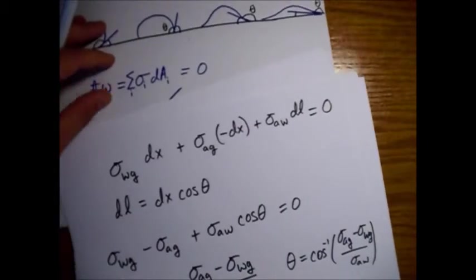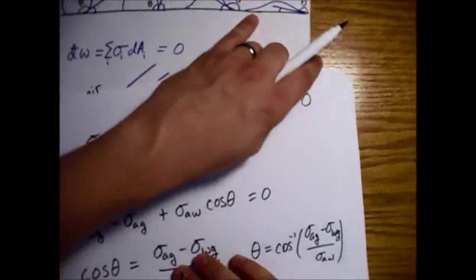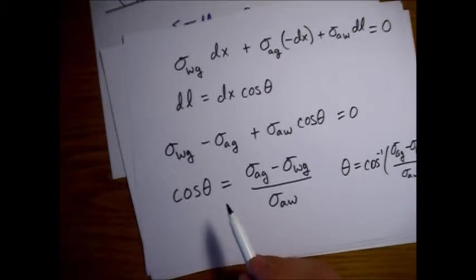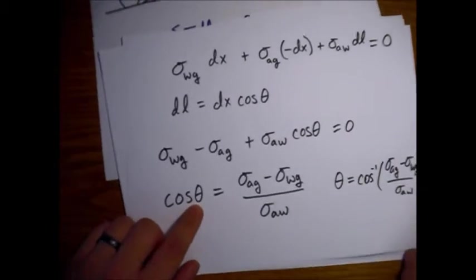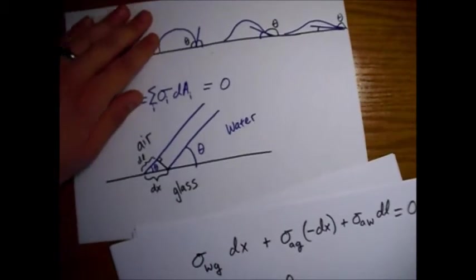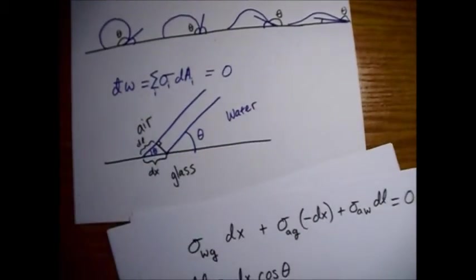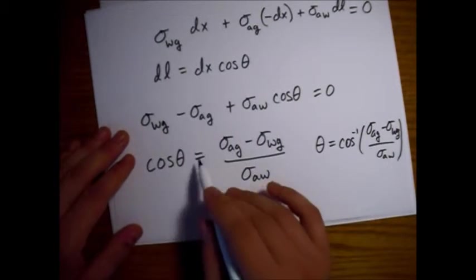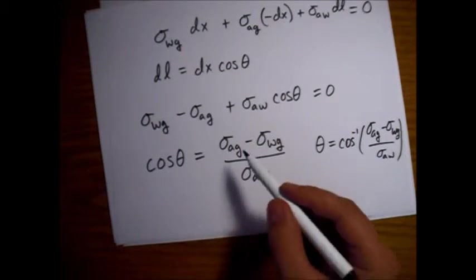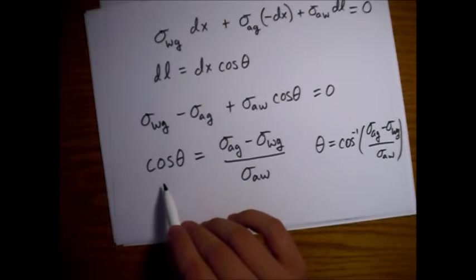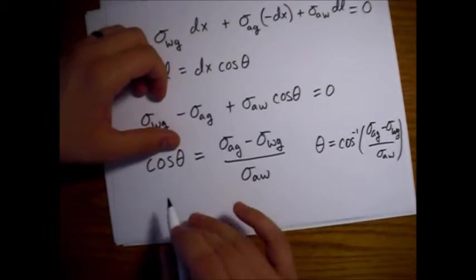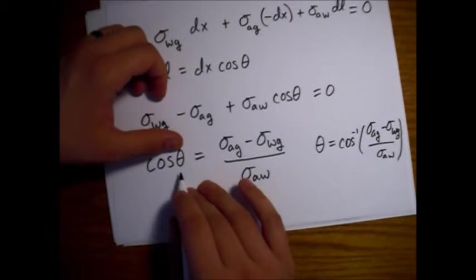So if we want to look at the condition where it completely wets the surface, well, that would correspond to a theta equal to zero, right? This theta would go all the way to zero, and we would have a completely flat situation. So for cosine of theta equal to zero, or theta equals zero, so cosine of theta equals one.